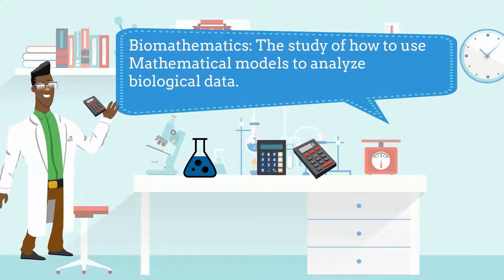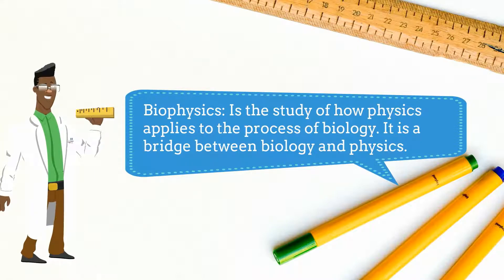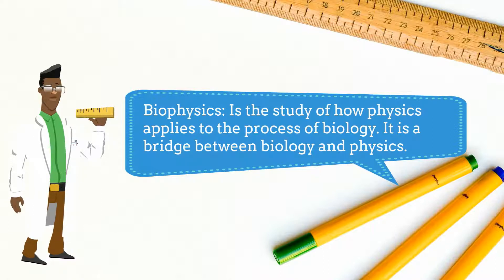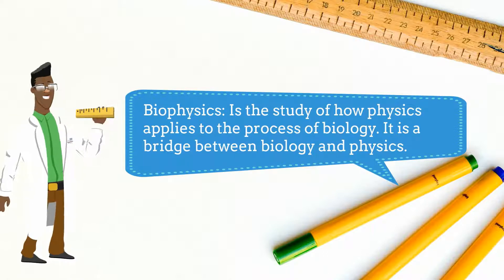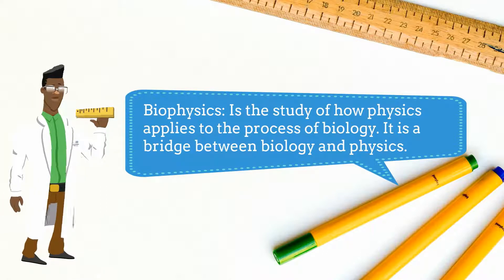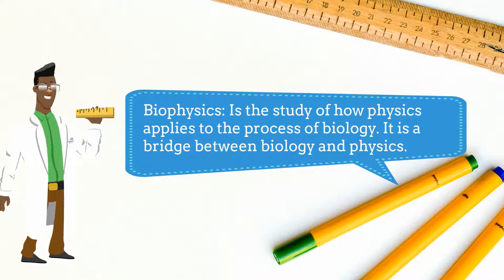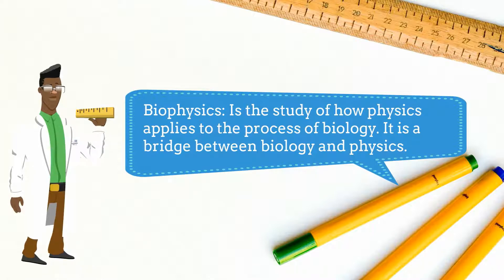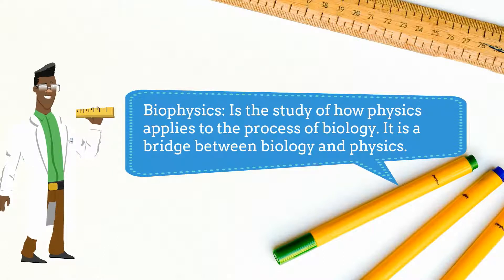Biomathematics is the study of how to use mathematical models to analyze biological data. And biophysics is the study of how physics applies to the process of biology. It is a bridge between biology and physics. So there we go, 5 new branches of biology.